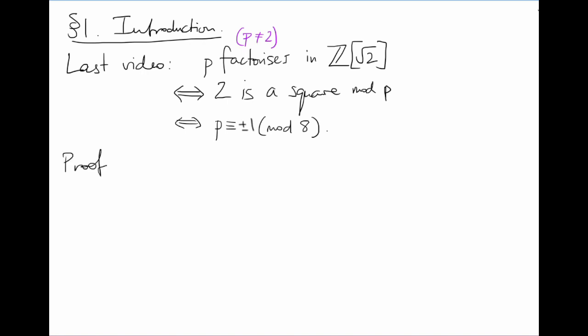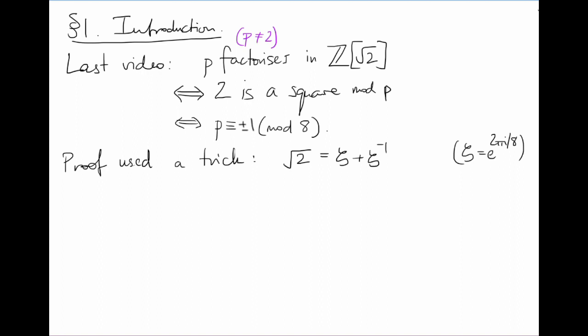In showing this, we used a crucial trick. We noticed that root 2 was equal to a certain sum of roots of unity. It was equal to zeta plus zeta inverse, where zeta is e to the 2πi over 8, a primitive eighth root of unity.